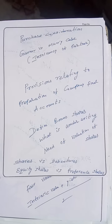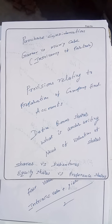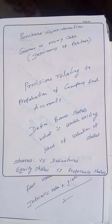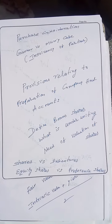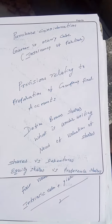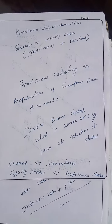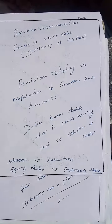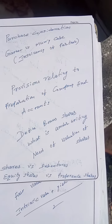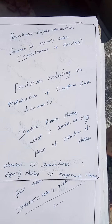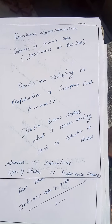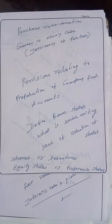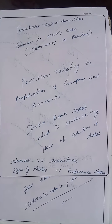Bonus shares are extra shares given by the company to existing shareholders. Bonus can be given in two ways: converting partly paid-up shares into fully paid-up shares, or giving extra shares. It is a kind of dividend where cash is not given. Underwriting means giving a guarantee.